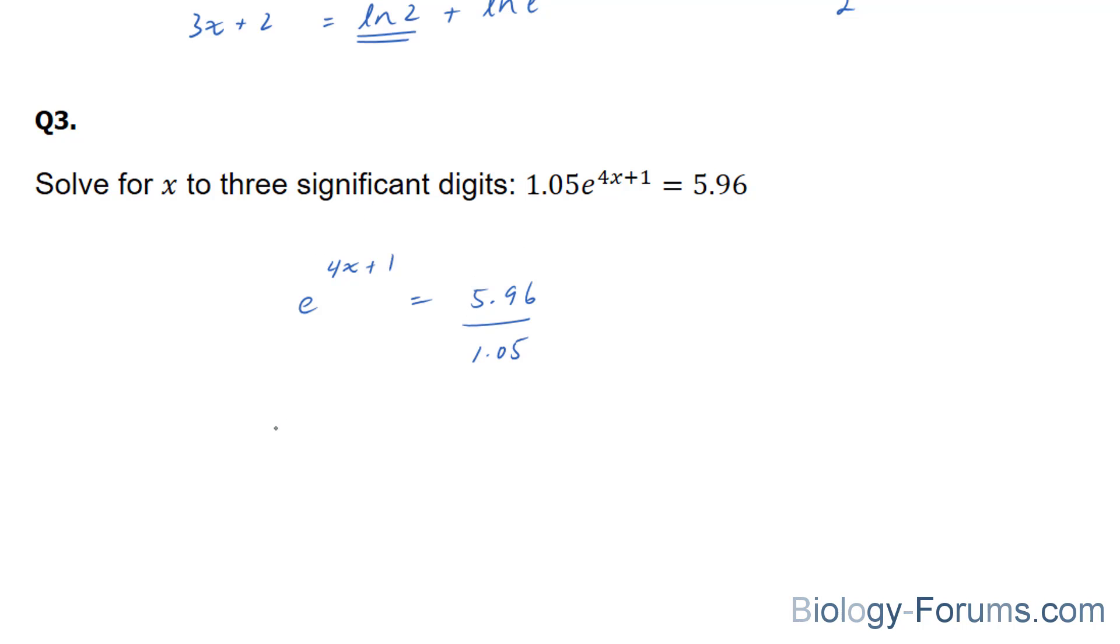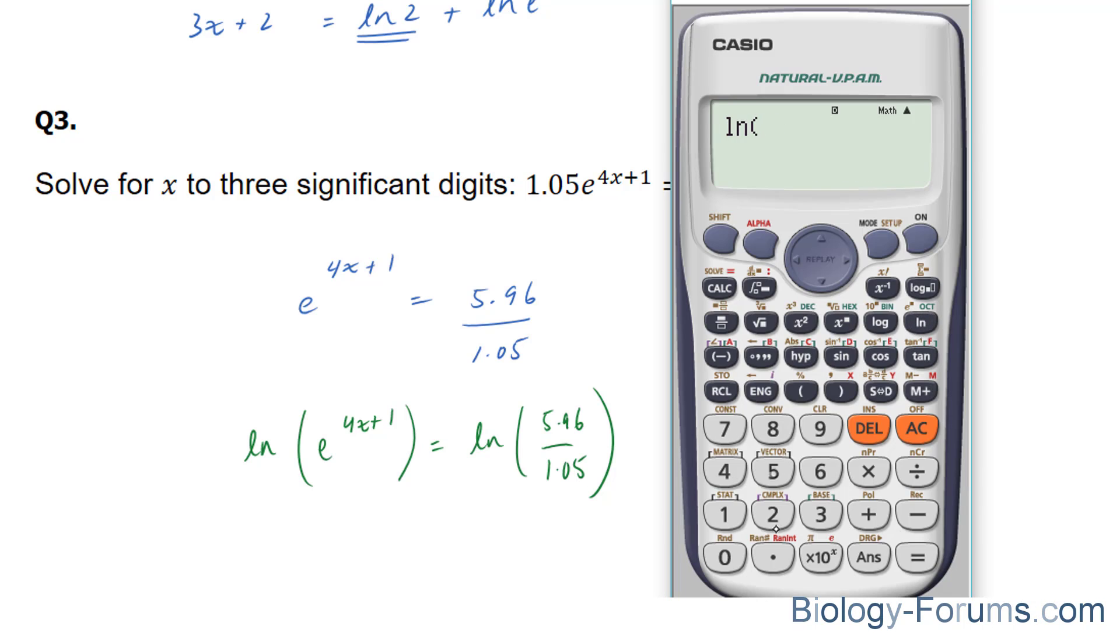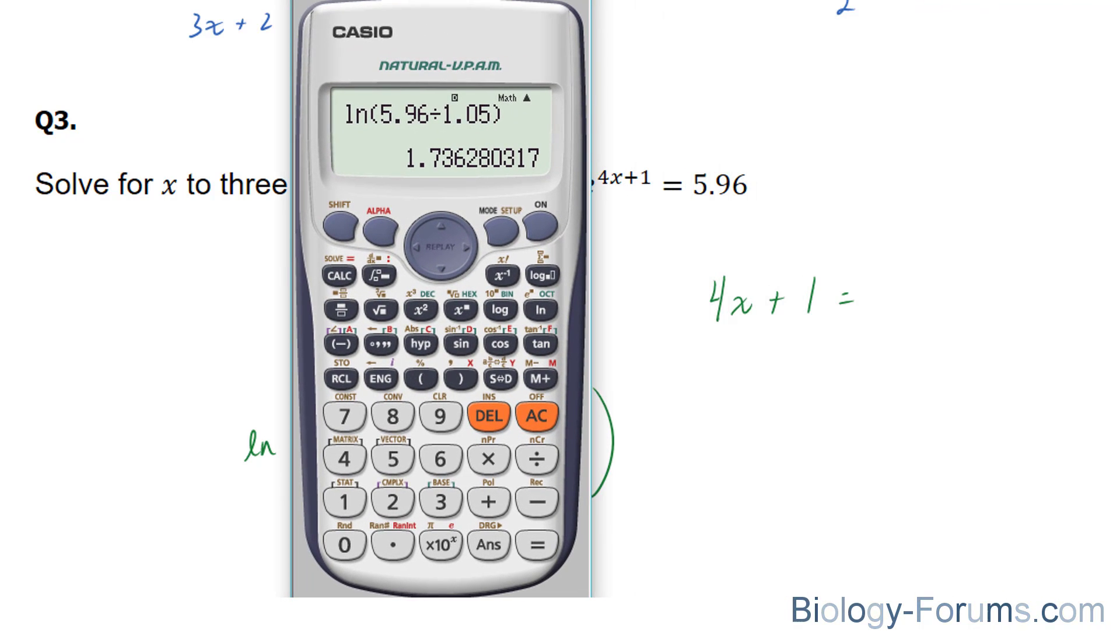If we ln both sides, we end up with these two canceling out, where you end up with 4x plus 1. And on the right side, you can go ahead now and use your calculator. ln of 5.96 divided by 1.05 gives us an answer of 1.73.